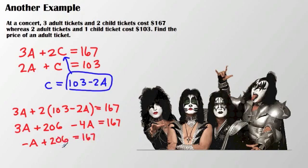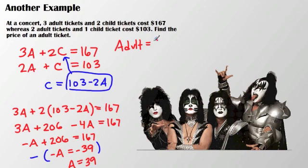Negative a plus 206 equals 167. So then, my next move is going to be to go ahead and subtract 206 from 167, and I get negative a equals negative 39. Alright, well I can't really have a negative a since I'm dealing with an adult here, so I'm going to go ahead and multiply everything by a negative, and that's going to get me a equals 39. So an adult ticket equals $39.